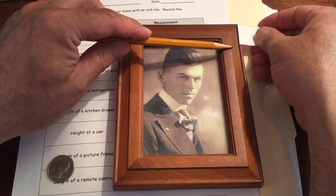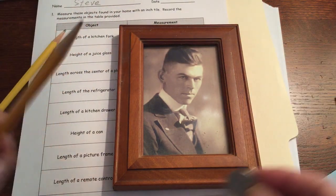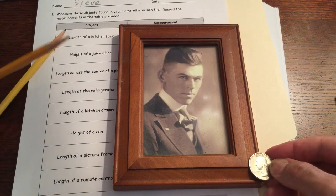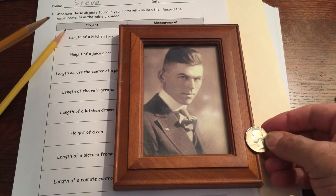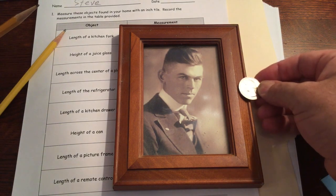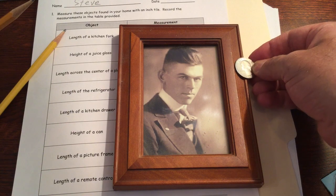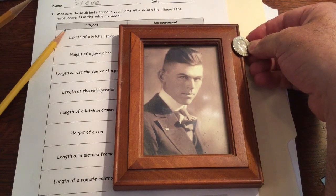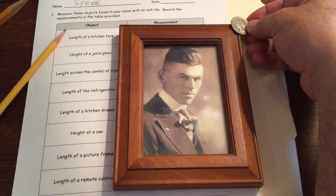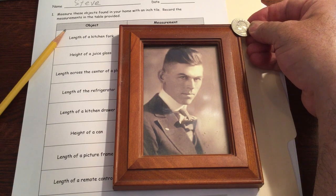So I got six squares out of that picture frame. Now if I use the quarter, it's harder because the quarter is round. One, two, three, four, five, six. And it's like six and you might call that seven.